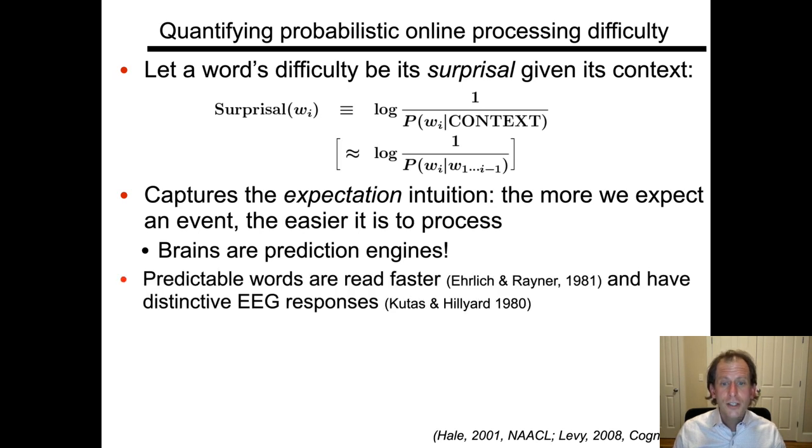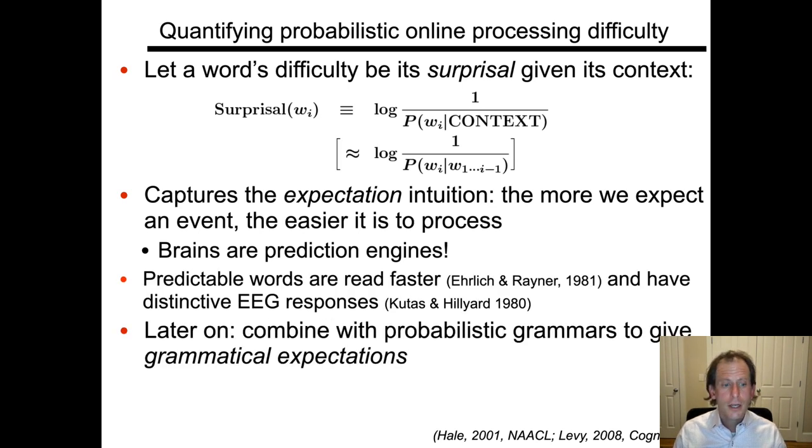So brains are prediction engines and predictable words are read faster and have distinctive EEG responses. And later on, once we have grammatical tools, formal mathematical descriptions of natural language grammar, we'll be able to combine probabilities and grammar together to get grammatical expectations.